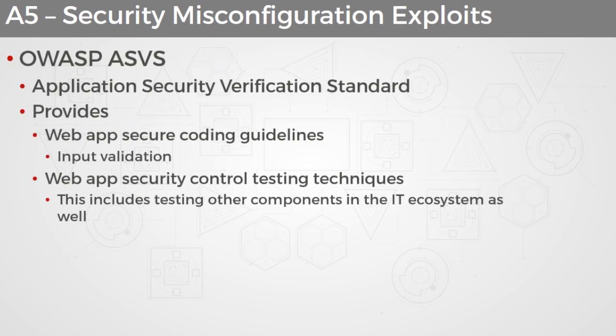The OWASP ASVS, or Application Security Verification Standard, is for developers. It provides secure coding guidelines that developers can adhere to through each phase of the Software Development Life Cycle, or SDLC, and includes things like how to do proper input validation to prevent things like cross-site scripting attacks. It also provides web app security control testing techniques so that we can test our controls to make sure they are effective in mitigating potential threats — not only at the web app level, but at its underlying layers.